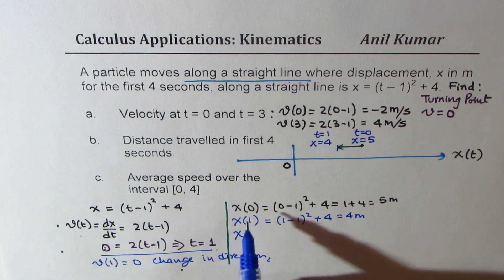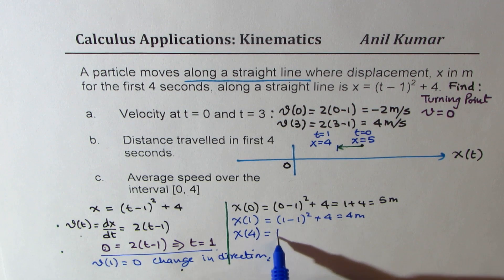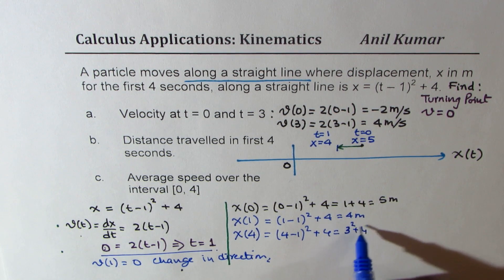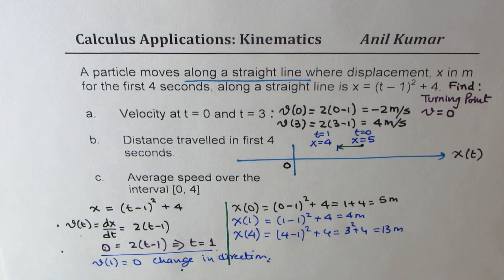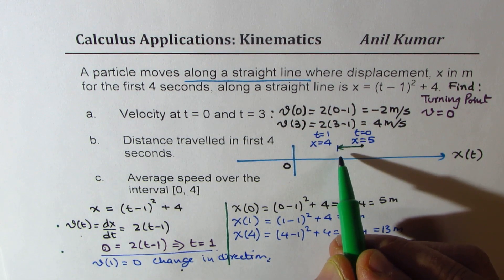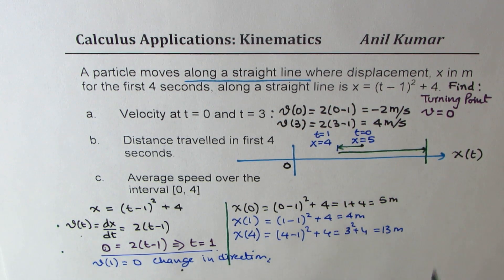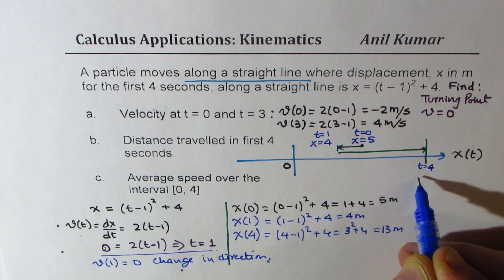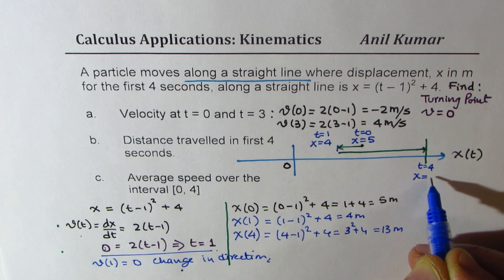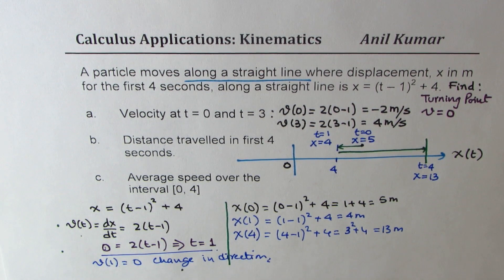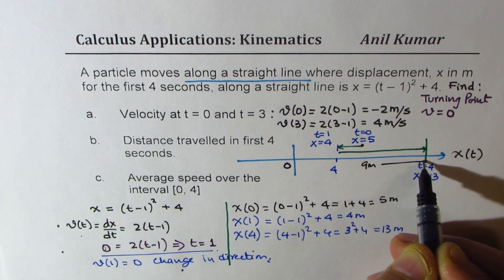Let us find the displacement when time is 4. Substituting 4 into the formula: 4 minus 1 whole square plus 4 equals 3 squared plus 4, which is 9 plus 4, giving 13 meters. At t equals 4, the position x is 13 meters from the reference point. From the turning point at 4 meters, the distance travelled is 13 minus 4 equals 9 meters.